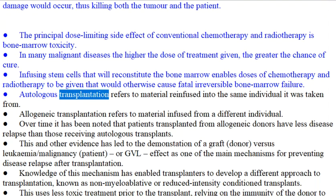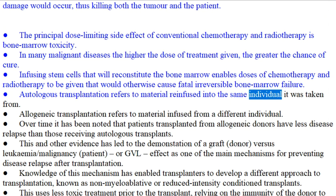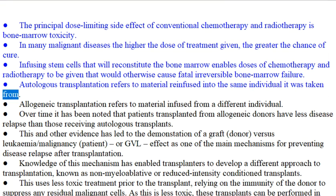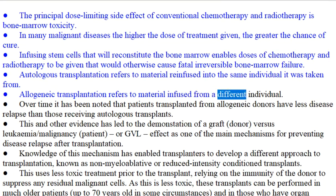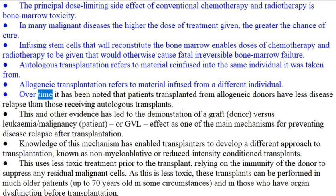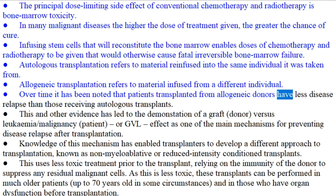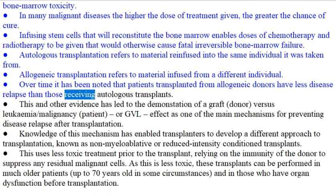Autologous transplantation refers to material reinfused into the same individual it was taken from. Allogeneic transplantation refers to material infused from a different individual. Over time it has been noted that patients transplanted from allogeneic donors have less disease relapse than those receiving autologous transplants.